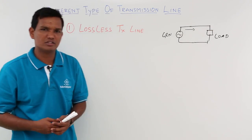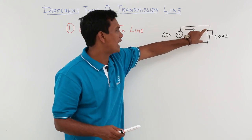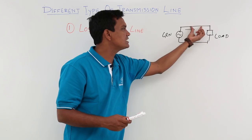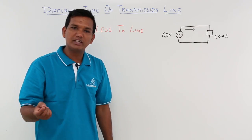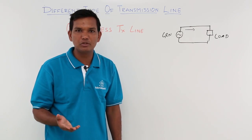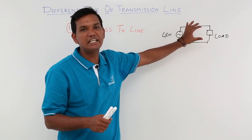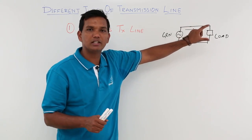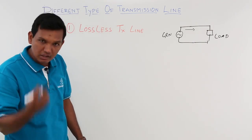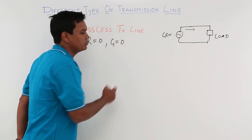When can we have zero loss? If we apply a voltage V here, at the next point we will have V plus delta V because resistance causes a voltage drop. So if you do not want any drop, your R should be zero. Another way loss occurs is when charge leaks out — to prevent that, your conductance G should also be zero. So for a lossless transmission line, R should be 0 and G should be 0.